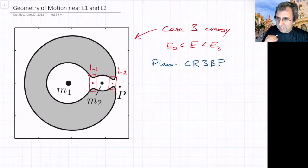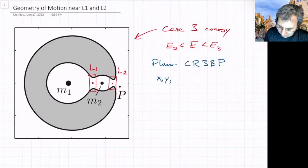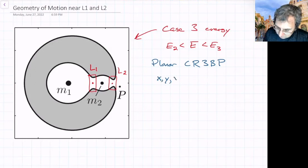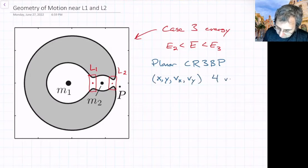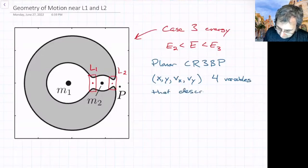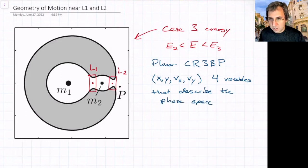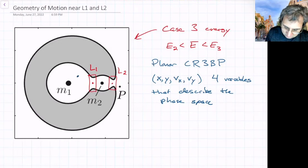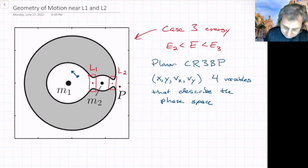We're looking at a fixed energy level. This simplifies things because otherwise we've got four variables: x, y, and then x-dot and y-dot. These are four variables that describe the phase space — you pick any particular x, y, vx, vy, that's an initial condition. It's an initial point with an x and y plus a particular vx and vy, so you've got some velocity.